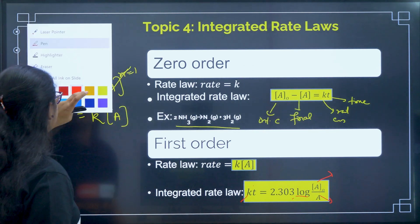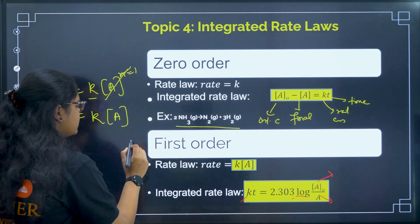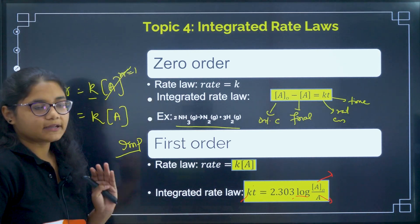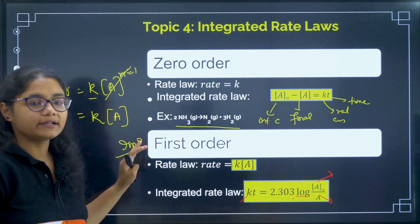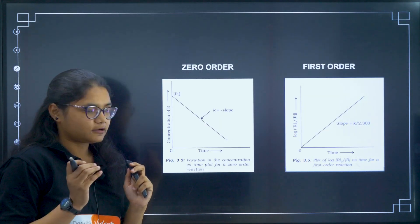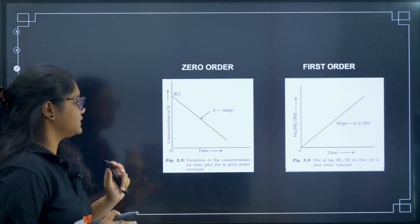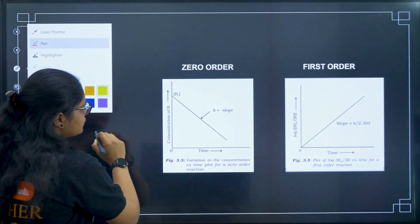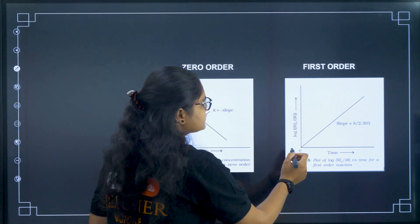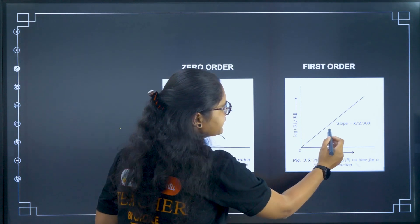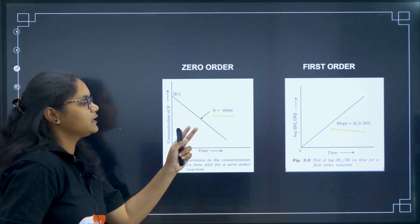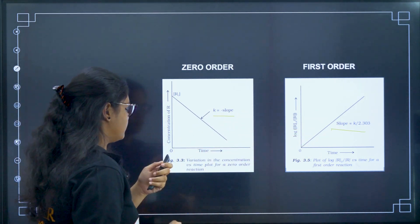You will get many numericals from these two topics, especially first order which is very, very important. Remember these two formulas for the numerical part. For graphs: zeroth order gives concentration of R versus time with a negative slope; first order gives log(R₀/R) versus time with a positive slope. Graph questions are not usually asked, but you should know the axes and slope directions.